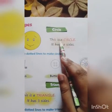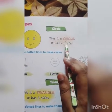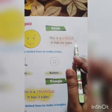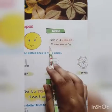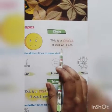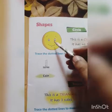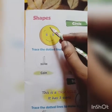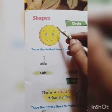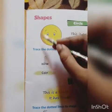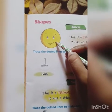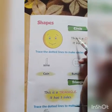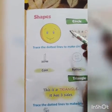This is a circle. C-I-R-C-L-E, circle. It has no sides. As you can see, a circle is in the shape of round. It has no sides, and we call it circle.